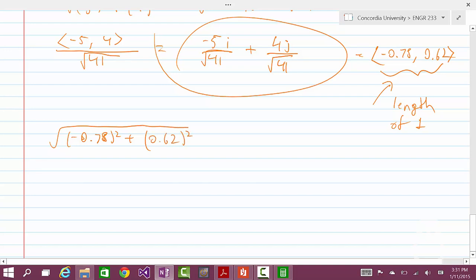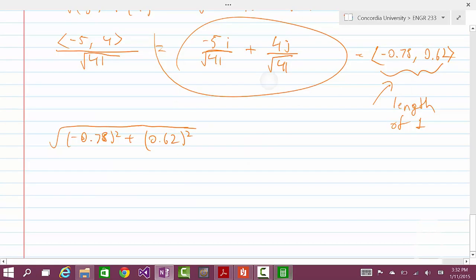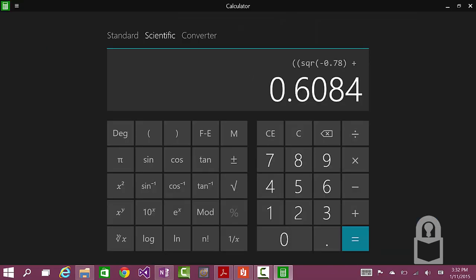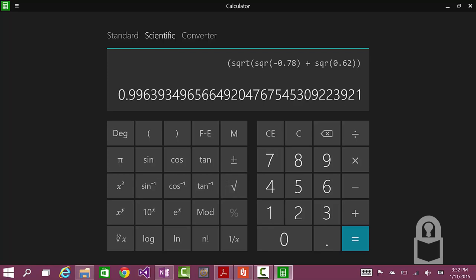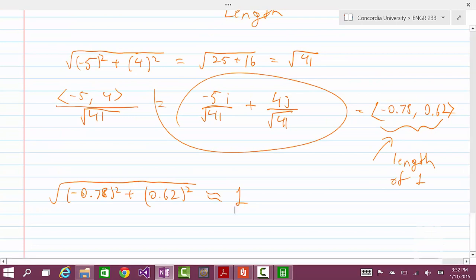So we do that again here. It would be minus 0.78 squared plus 0.62 squared. And let's see what that comes up as. So we have the square root of negative 0.78 squared plus 0.62 squared. And as you can see it's 0.9963 because we approximated earlier. It's very close to one.